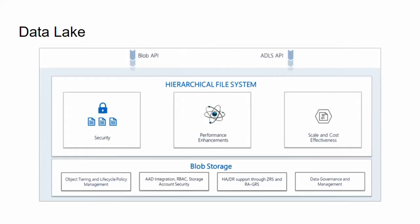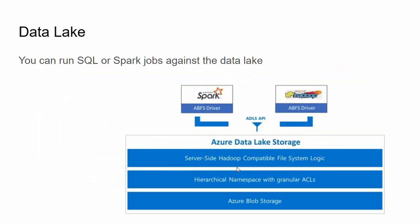Inside a data lake, there is a hierarchical file system that handles security, performance enhancement, and so on. You utilize an API to call this file system. The data are stored in blob storage within an Azure storage account. You can also run SQL or Spark, in addition to using the API, against the data lake. It's a blob storage with a hierarchical namespace and HDFS-style file logic, which together form Azure Data Lake Storage. You can run SQL or Spark jobs against this data lake storage as multiple relational datasets.